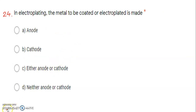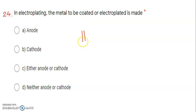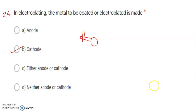Next question: in electroplating, the metal to be coated or electroplated is made — anode, cathode, either, or neither? Many students get confused here. 'Metal to be coated' means the object on which we have to give the coating, for example an iron spoon. In electroplating, the metal to be coated is used as a cathode. Correct answer is cathode.